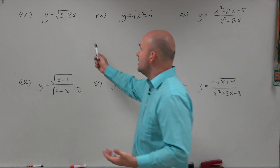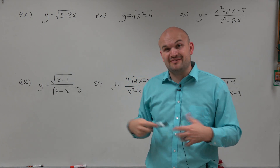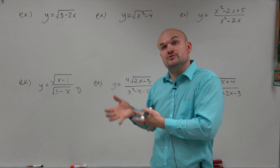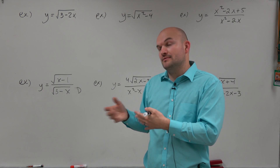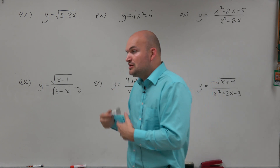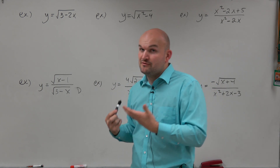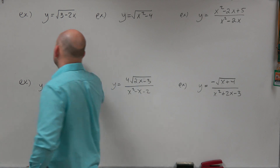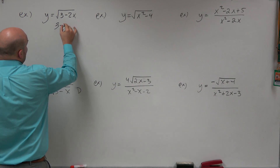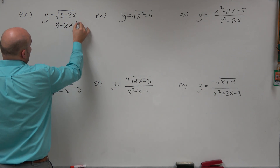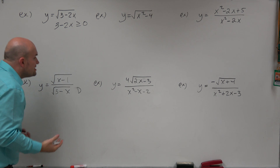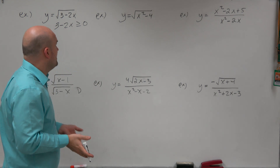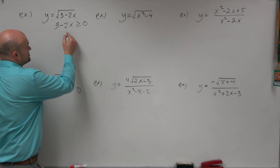We know that 3 minus 2x cannot be negative. It has to be greater than or equal to 0, because we can't take the square root of any negative numbers. So to determine the domain for a radical like this, the easiest thing to do is just set up an inequality: 3 minus 2x has to be greater than or equal to 0. It can't be negative. So now we can just go ahead and solve.